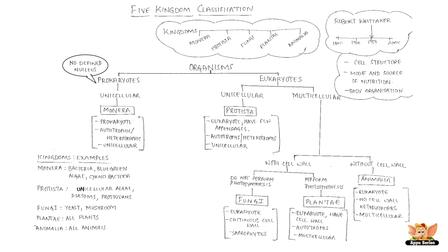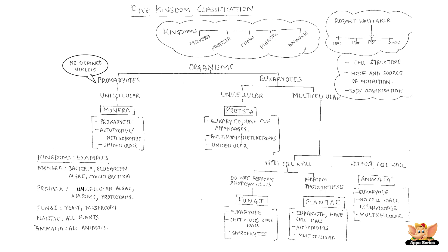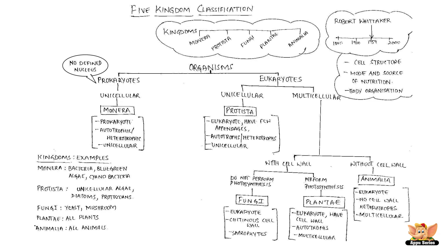This diagram shows the basis of classification of living organisms into five kingdoms: Monera, Protista, Fungi, Plantae, and Animalia — the highest level in the hierarchical classification. We will study kingdom Plantae and Animalia in detail in the forthcoming slides.